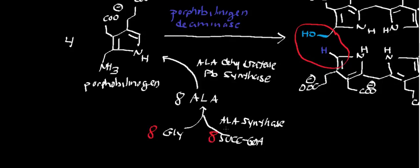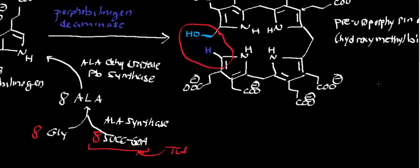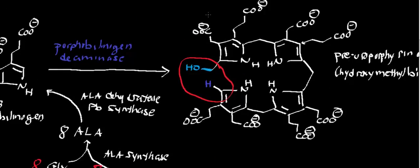The glycines can easily come from the diet, but the succinyl-CoAs have to come from the TCA cycle. So the synthesis of heme is actually pretty energetically exhaustive. To make one heme, you're going to sacrifice some energy from the TCA cycle — you need eight glycines and eight succinyl-CoAs just to make hydroxymethylbilane or pre-uroporphyrinogen.